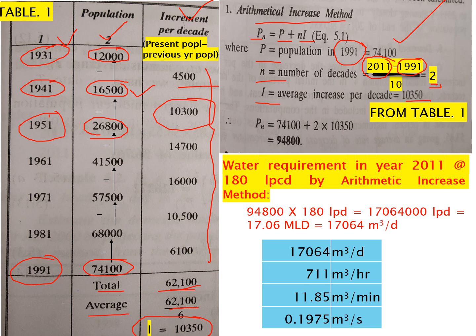From the table we have all this data. So Pn = 74,100 (existing population) + 2 (number of decades) × 10,350 (average increment per decade) = 94,800. This means in year 2011 we predict a population of 94,800, based on the simple arithmetic increase method.